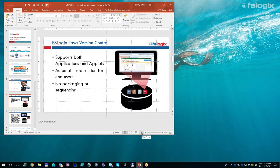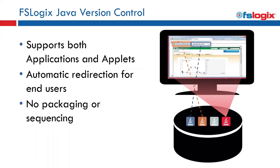A question from the audience: Java has been a security issue for years — how does the Java product impact security? If configured correctly, you can restrict an old Java version so it's only available to a single URL and single process. You can combine it with app masking to completely hide it from the OS and file system, siloing off that vulnerable Java version to an extreme degree and significantly reducing the attack surface.